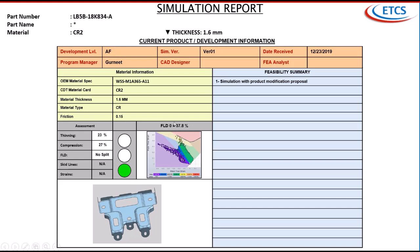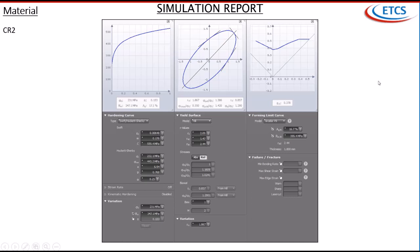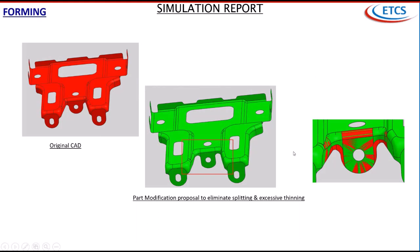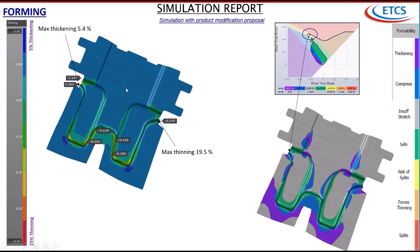We changed the material here - from A21 we went to A11 and used CR2. The material card is not very different. You can see what we have today is very close to that. The left red was the original card and the green one is our proposal, which is almost the same as the latest one - with a little bit more changes. In the latest one we changed where we had maximum thinning of 19.5%.